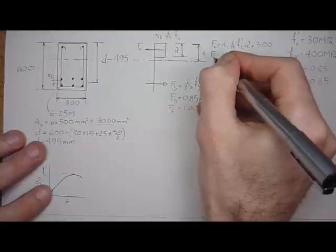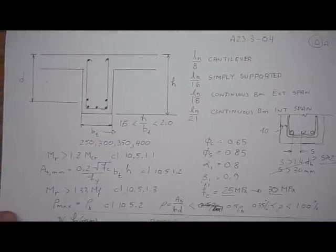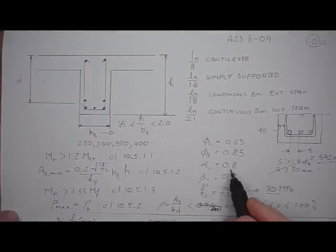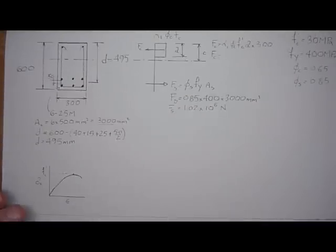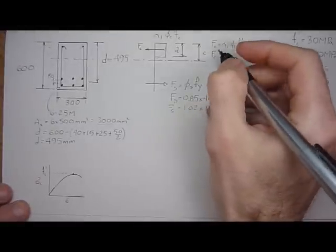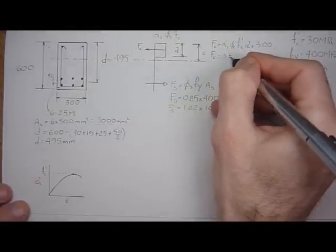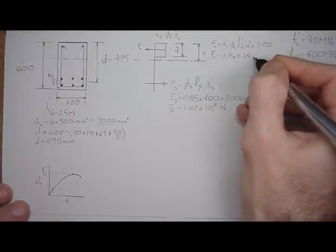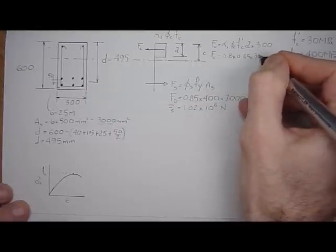So force in the concrete, alpha 1, like we said in our last tutorial here, I wrote down some rules that alpha 1 will always be 0.8, or thereabouts. That's close enough for f prime c, 25 or 30 MPa. And beta is 0.9, beta 1 is 0.9. So alpha 1 is 0.8, phi of the concrete is 0.65, f prime c is 30.